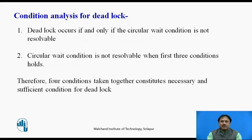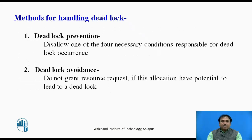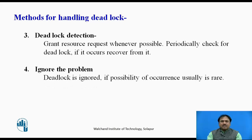All four conditions must occur simultaneously — they are the required and sufficient conditions to create a deadlock. There are several policies for handling deadlock. The first is deadlock prevention: disallow one of the four required conditions. The second is deadlock avoidance: avoid unnecessary resource requests by processes that could lead to deadlock. The third is deadlock detection: allocate resources as requested but regularly check for deadlocks.